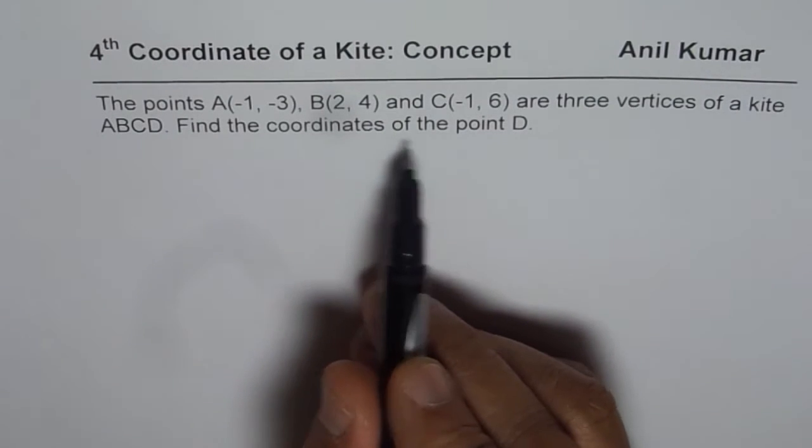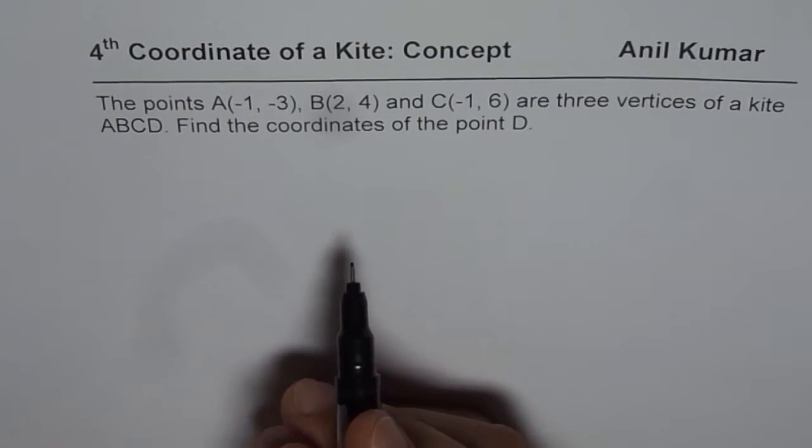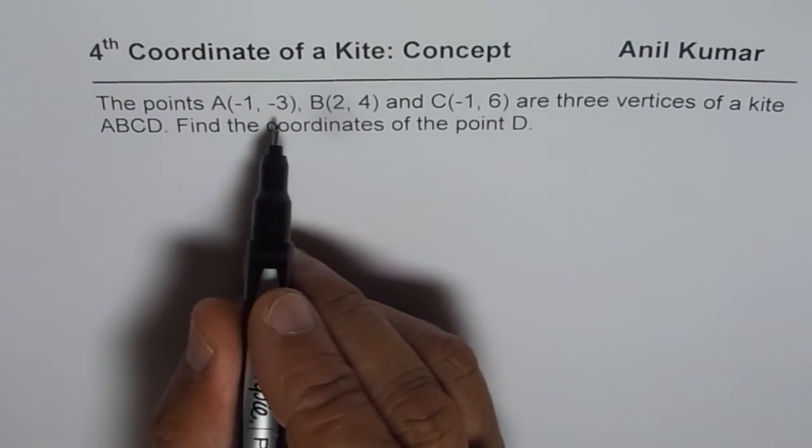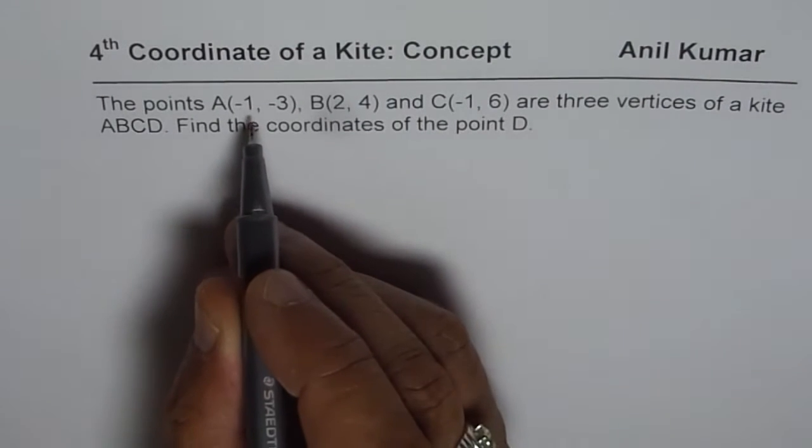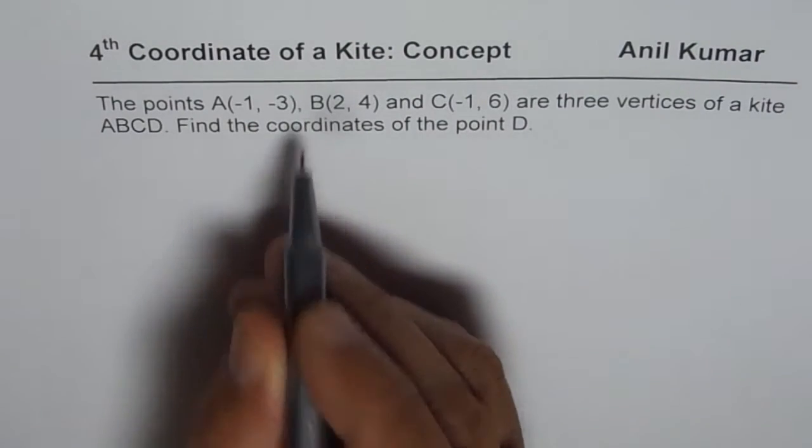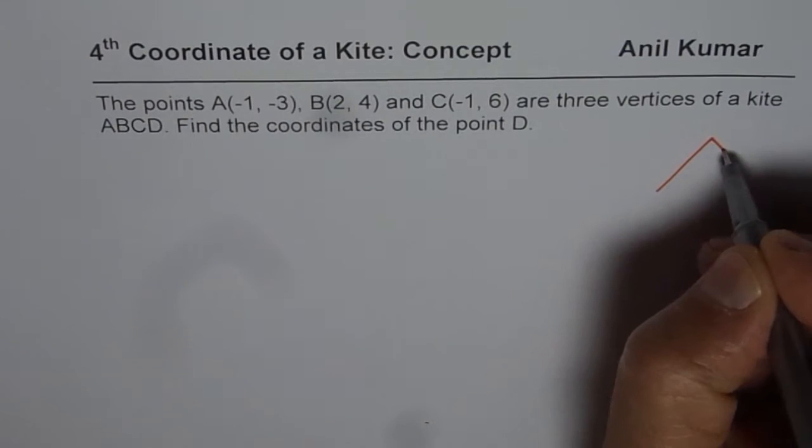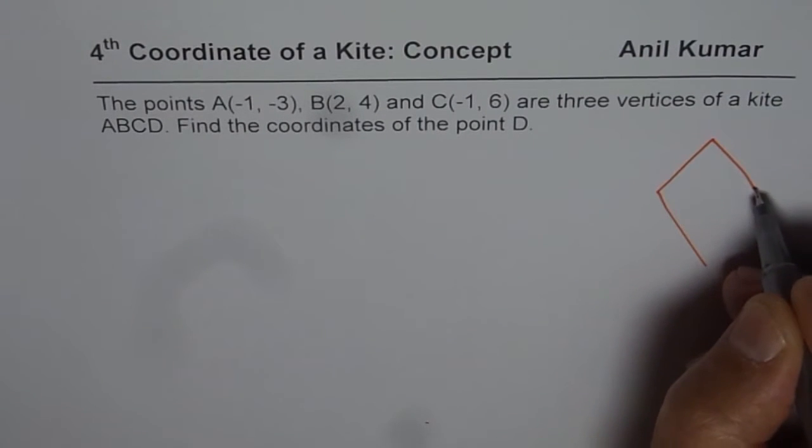So what we are given here are three coordinates of a kite. A kite, as you know, is a four-sided figure, a quadrilateral, in which diagonals bisect. And in this particular case, I have taken two points of a diagonal which are placed on a vertical line.